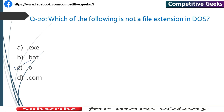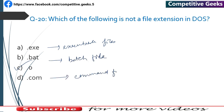Number 20: File extensions in DOS — .exe is an executable file, .bat is a batch file, .com is a command file, .doc is a document file, .txt is a text file, .prg is a program file, and .sys is a system file.